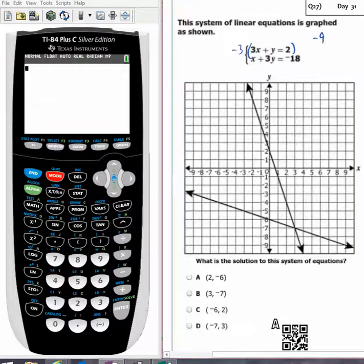This is negative 9x minus 3y equals negative 6. Then the second equation is x plus 3y is equal to negative 18.